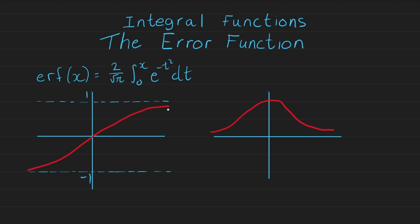So the first question is: why is it called the error function? It's called the error function because in early statistics and probability, when scientists were first investigating this, they were interested in measurement errors — what the error in a series of experiments accumulates to overall. People found that errors actually follow a certain distribution, which is the Gaussian distribution.